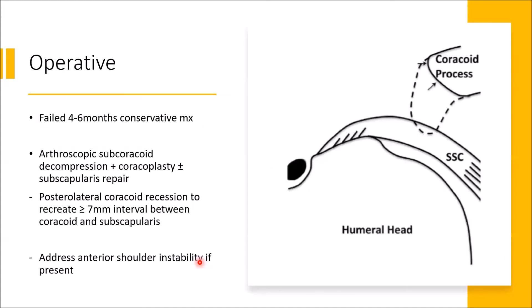Management: non-operative treatment is rest and NSAIDs, activity modification — avoid flexion, adduction, and internal rotation activities — physiotherapy with periscapular and rotator cuff muscle strengthening, deltoid strengthening, posterior capsule stretching, and subcoracoid steroid and local anesthetic injection. Operative treatment is indicated when conservative management fails after four to six months. The surgery is arthroscopic subcoracoid decompression with coracoplasty, plus or minus subscapularis repair — a posterolateral coracoid recession to recreate the 7 mm interval. Anterior shoulder instability must also be addressed if present.